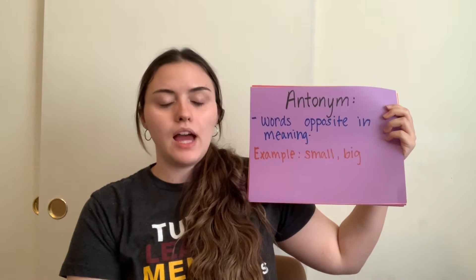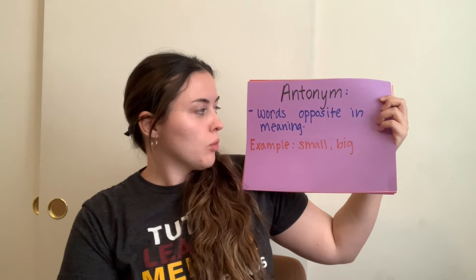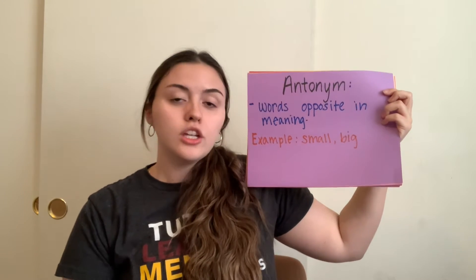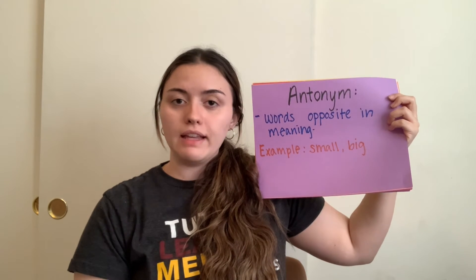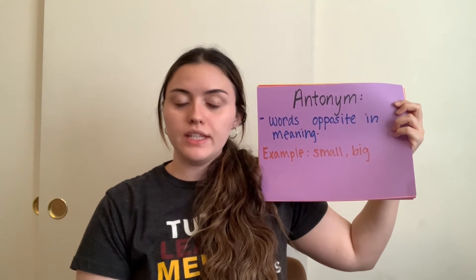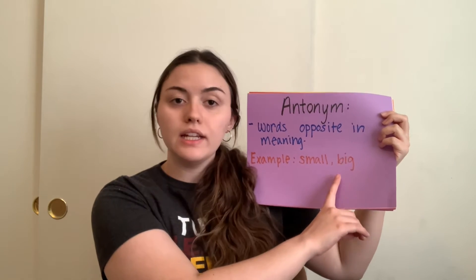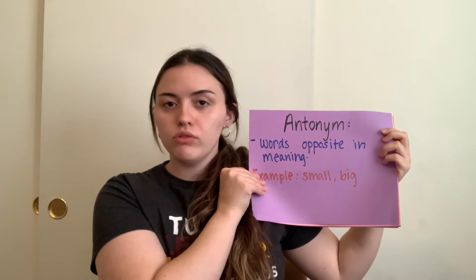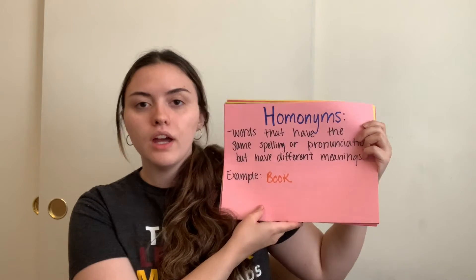On the opposite side we have antonyms, which are words opposite in meaning. Just as I used small and little as examples of synonyms, we have small and its opposite word big. This is a type of word relationship, as is synonym.